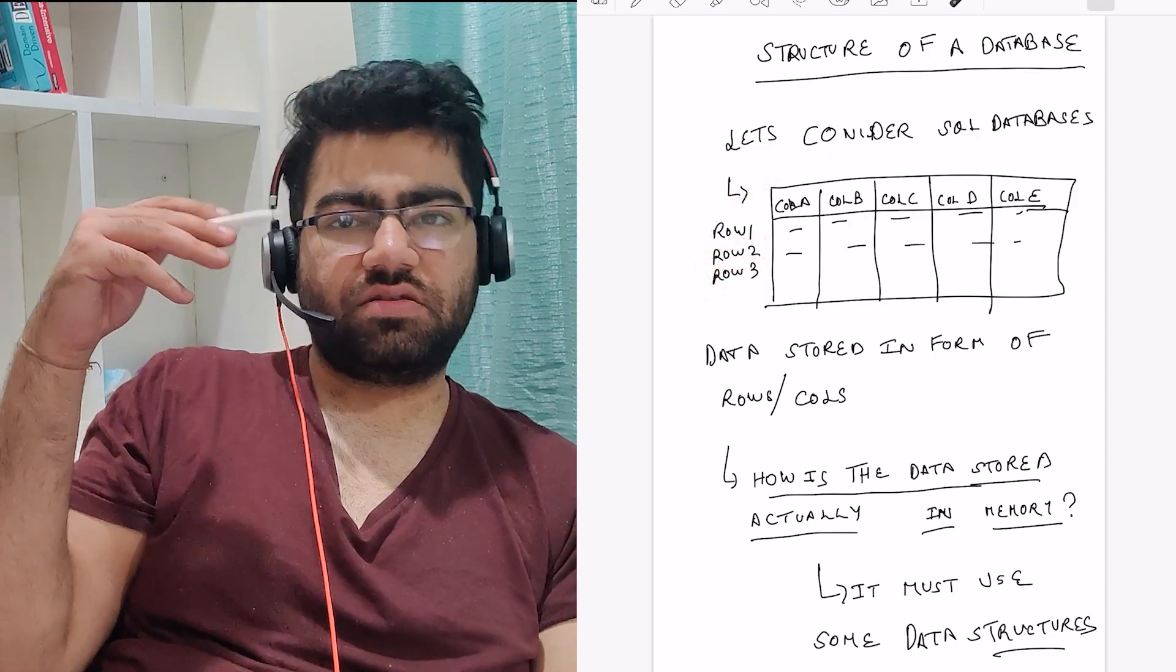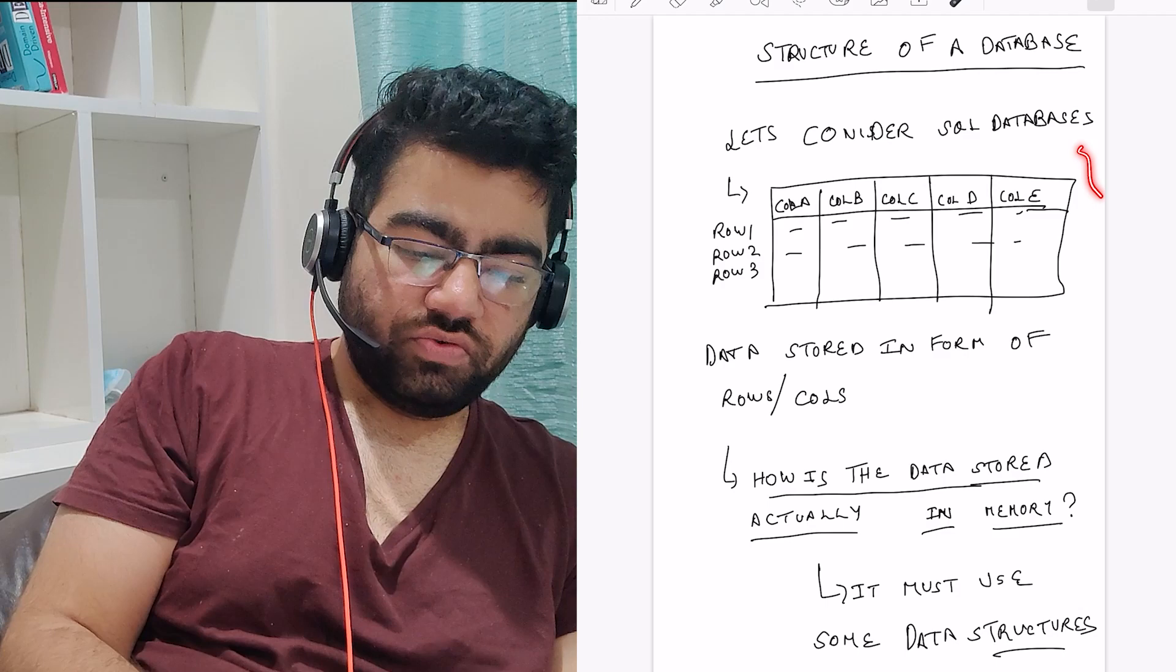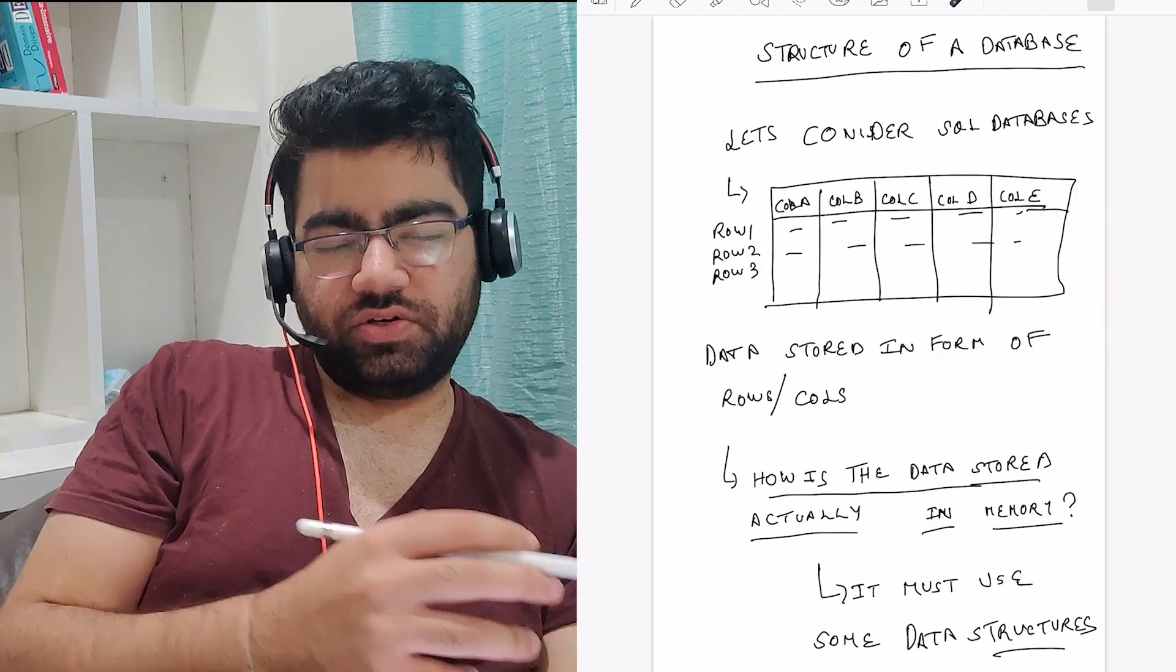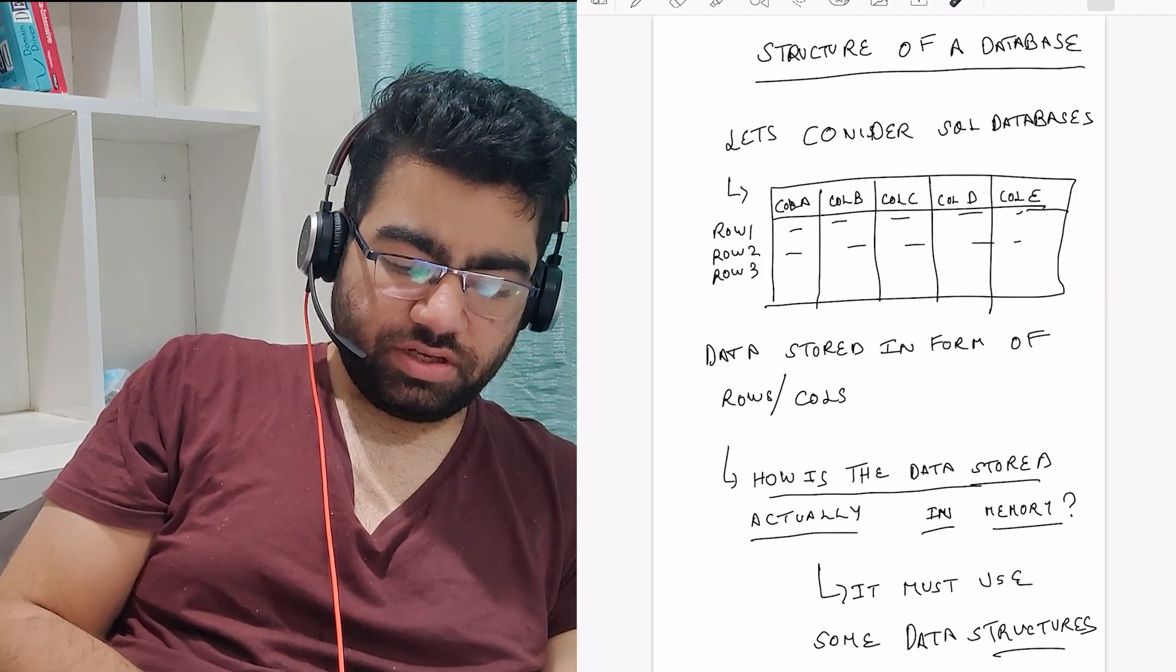In a SQL database, the data is stored in the form of rows and columns. This is the view which you see on the top layer. Now how is this data actually stored in the memory?